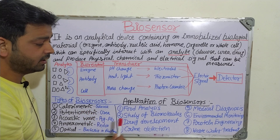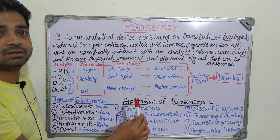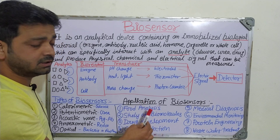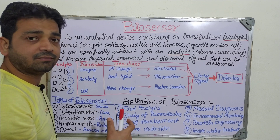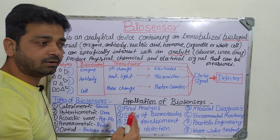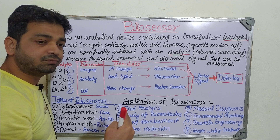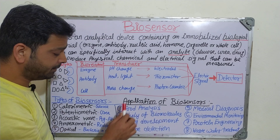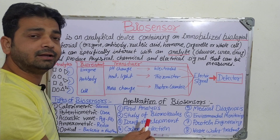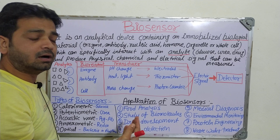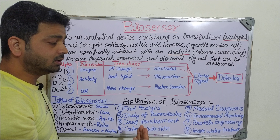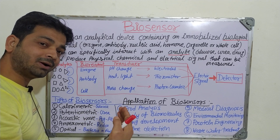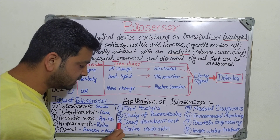Now coming to the applications of biosensors — the fields where we are using them. In food analysis, biosensors help determine whether food has spoiled, its content, and shelf life — for example, the expiry date on bread. For the study of biomolecules, such as blood components like RBCs, WBCs, platelets, and hemoglobin, biosensors can detect quantities, shape and size of RBCs, and conditions like anemia.